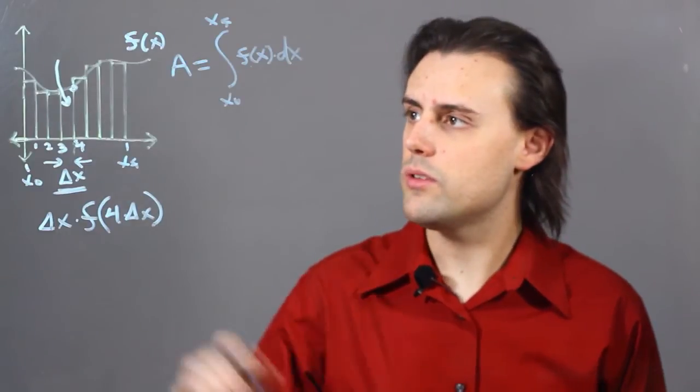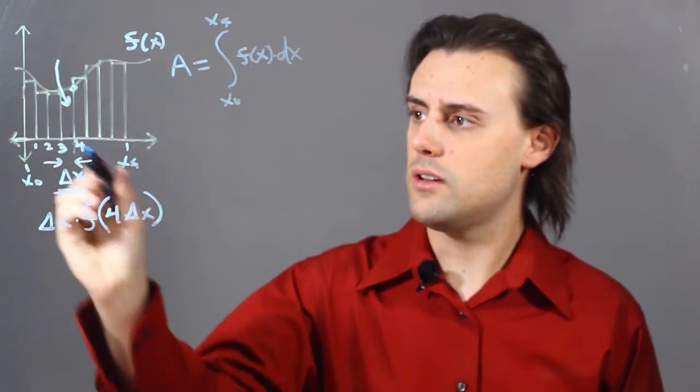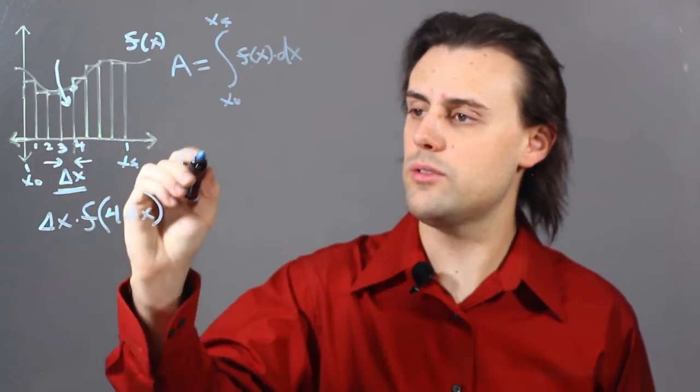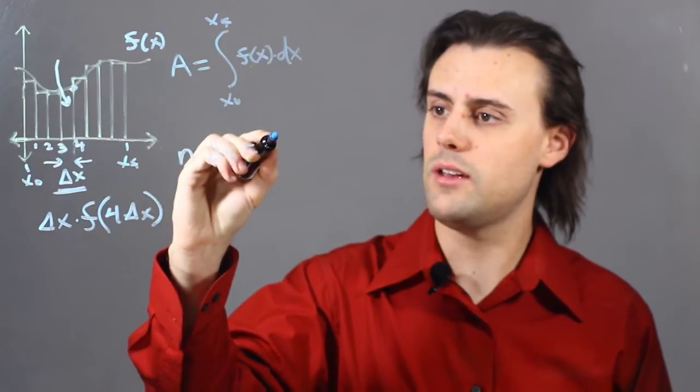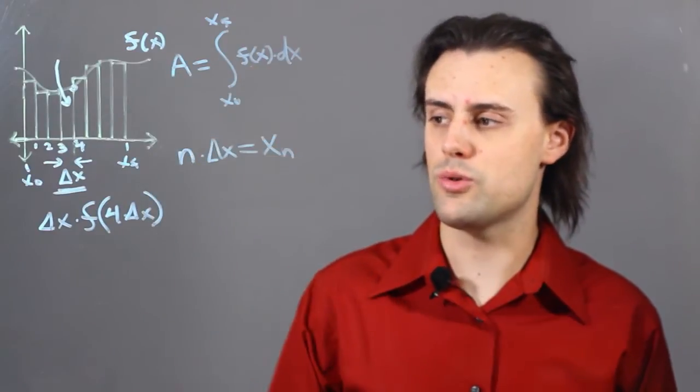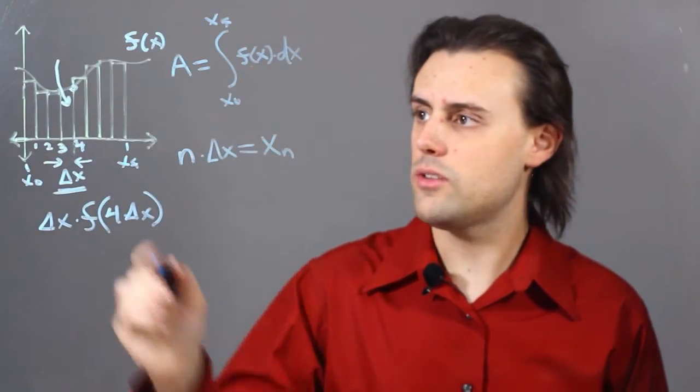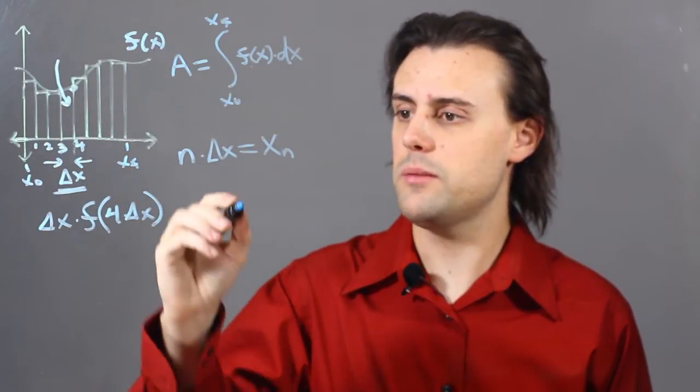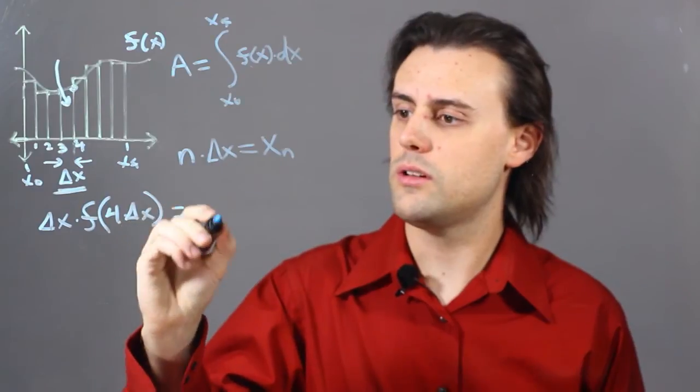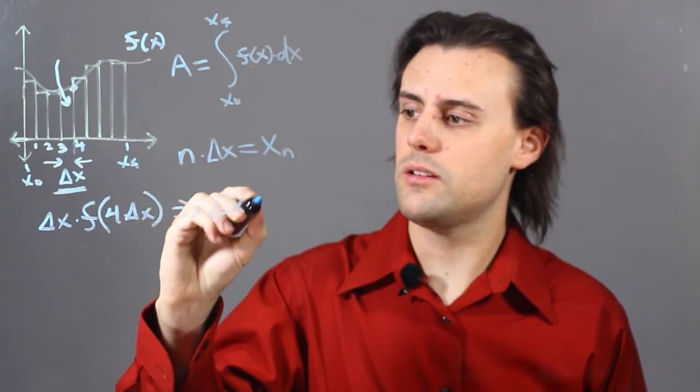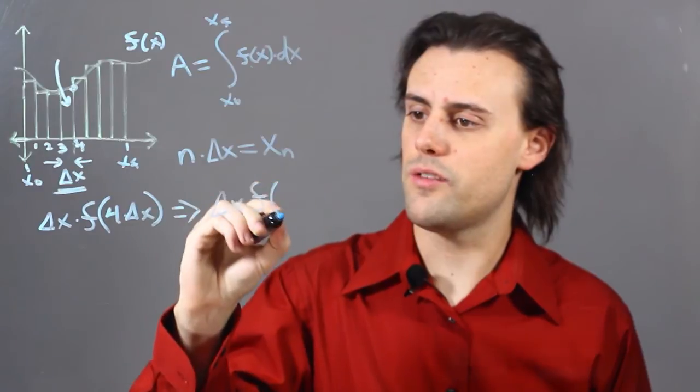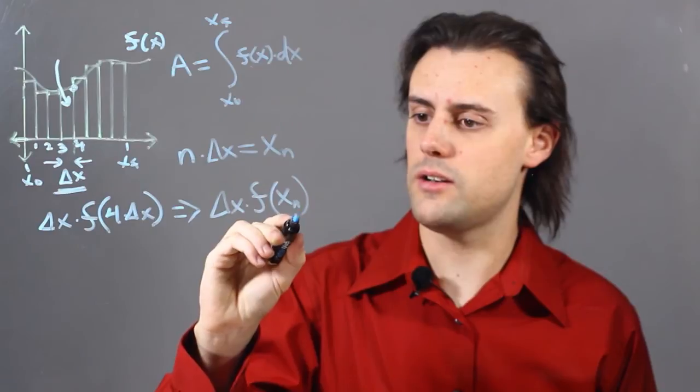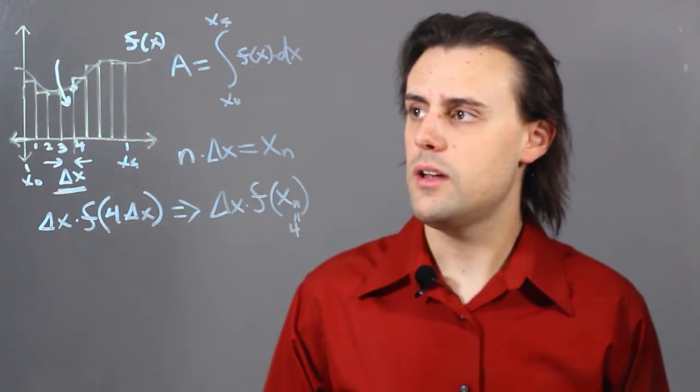So, in general, the value of x is given as the number of rectangles times delta x, and we can call that x sub n for short. So, for a given rectangle, the area of that rectangle would simply be equal to delta x times the function evaluated at x sub n. In this case, I chose n to be equal to 4.